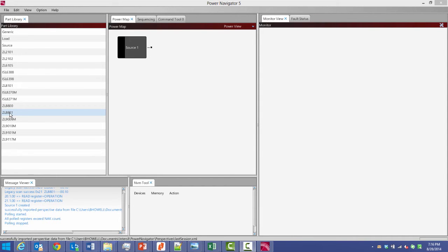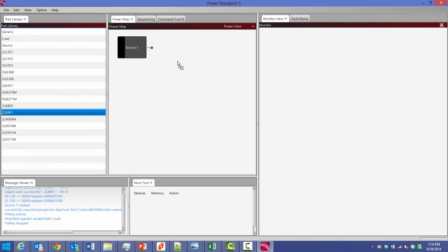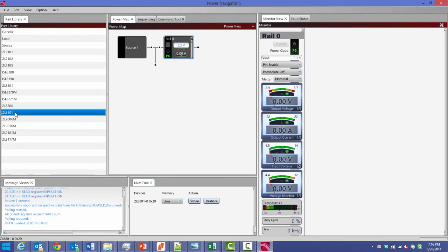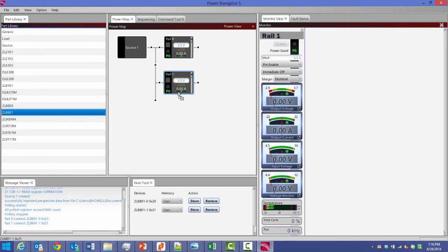The first thing I'm going to do is drag the ZL8801 controller from our Power Navigator part library. So I will drag two devices onto the power map, and then to put them in current share, it's as simple as dragging one of the devices by this donut-looking object.